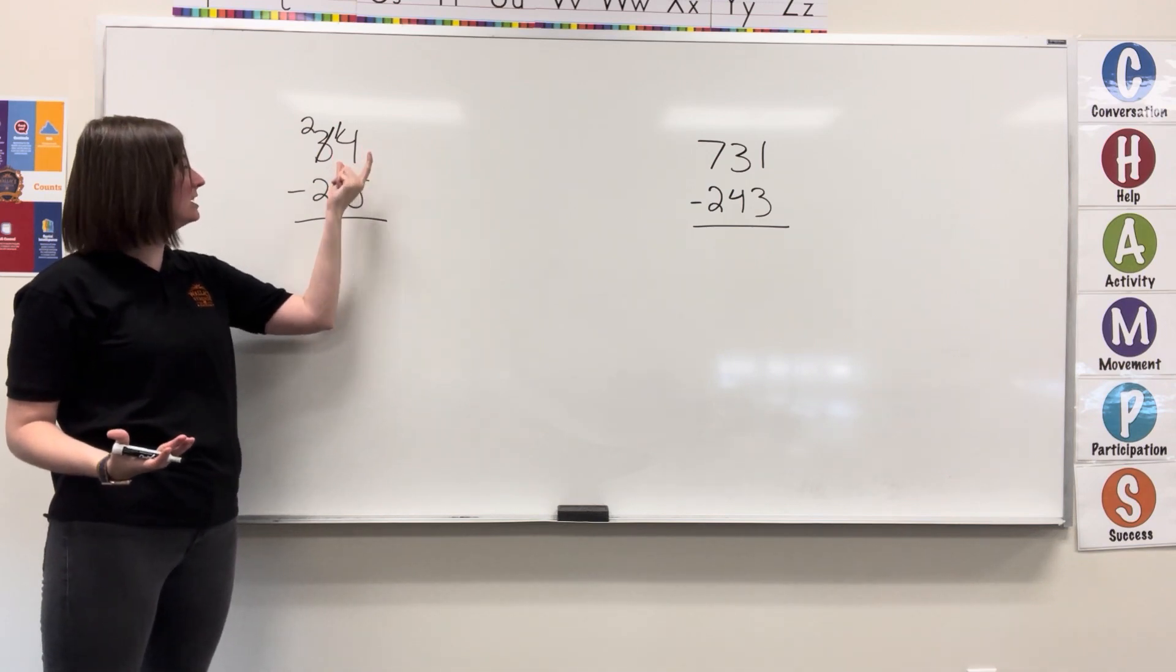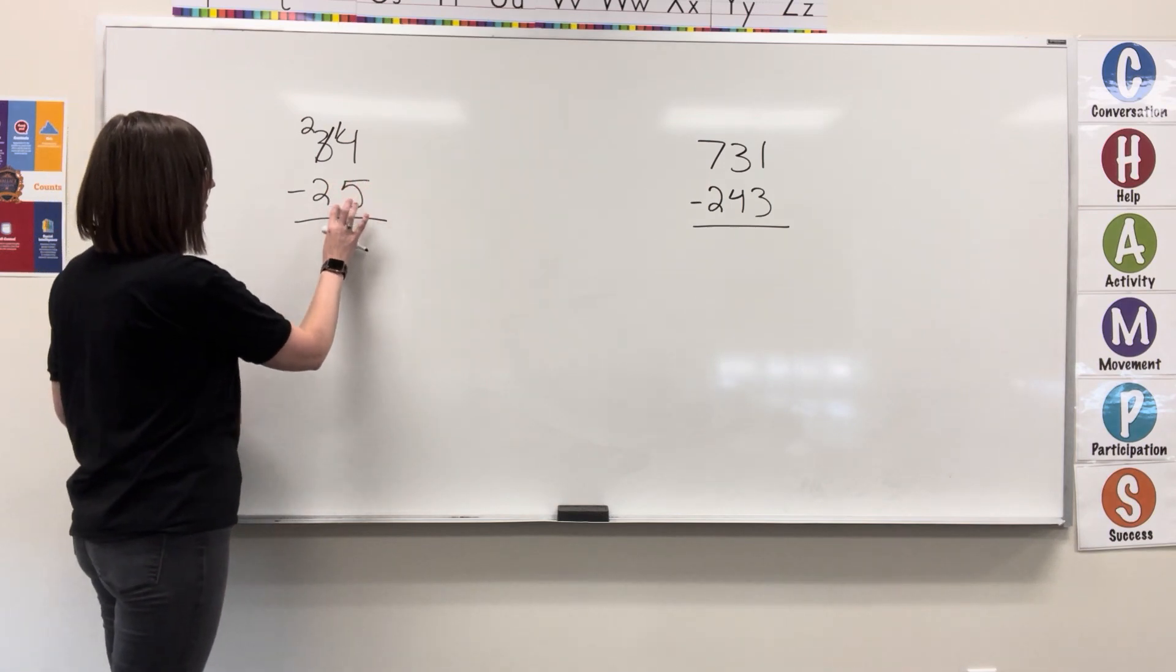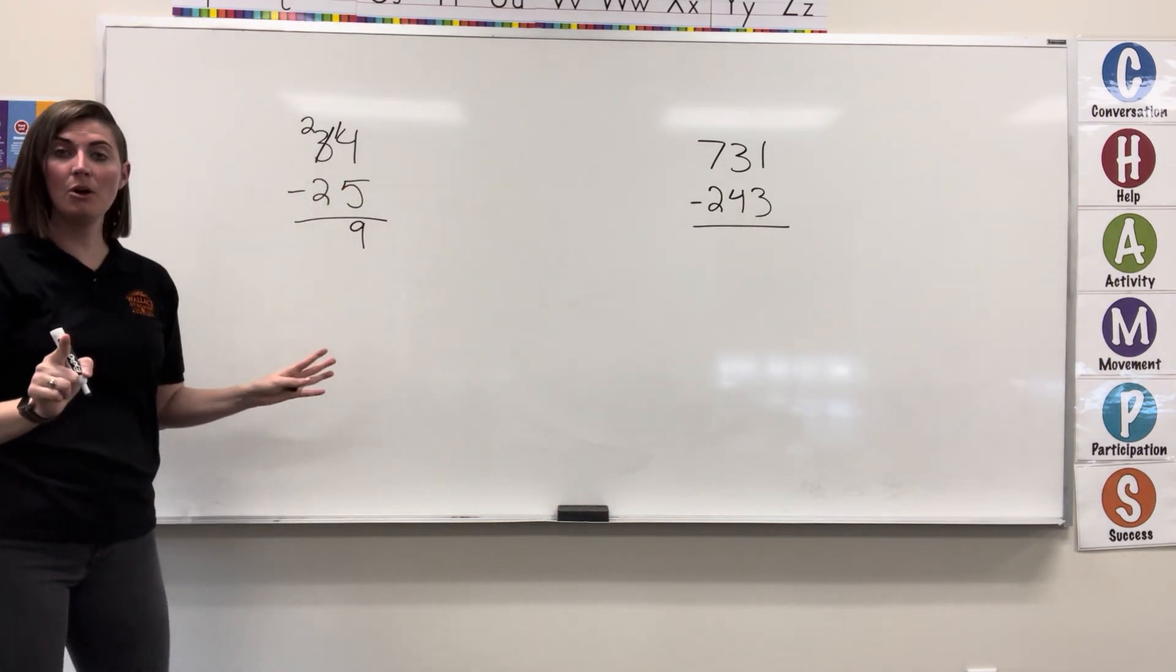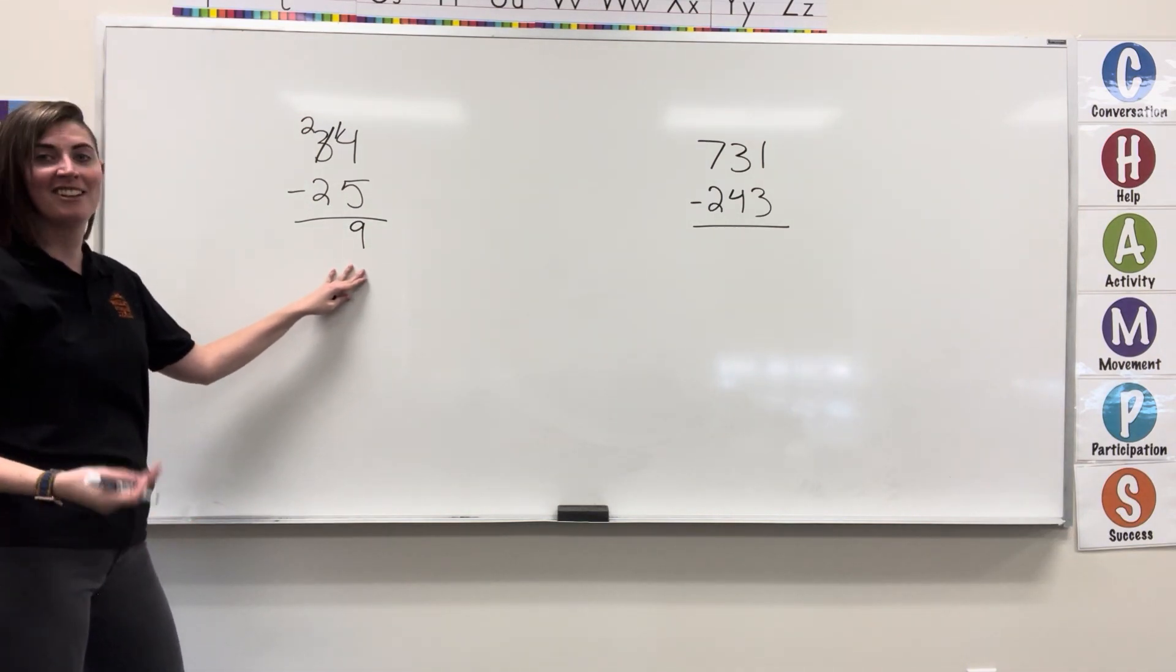So now I have 14 minus 5, that gets me 9. 2 minus 2 is 0, we don't start numbers with 0, so our answer here is just 9.